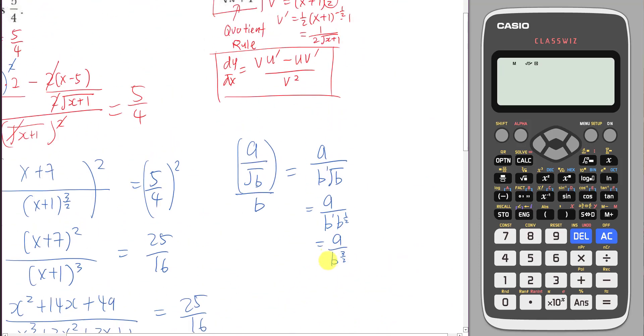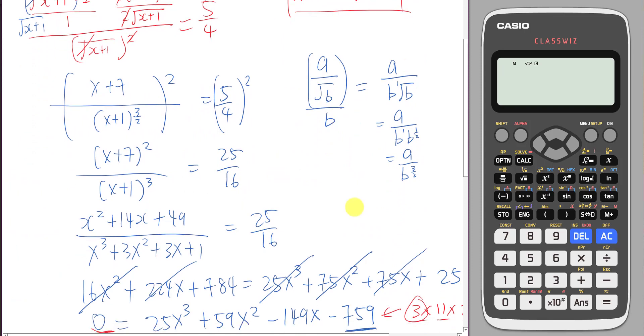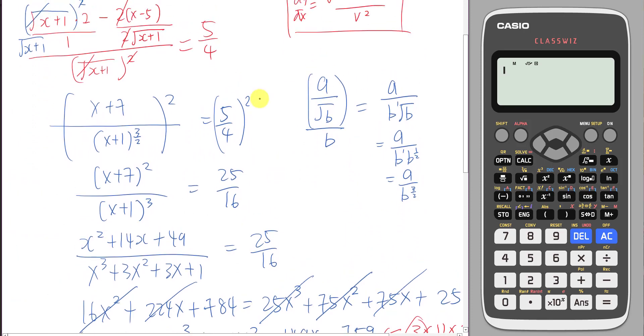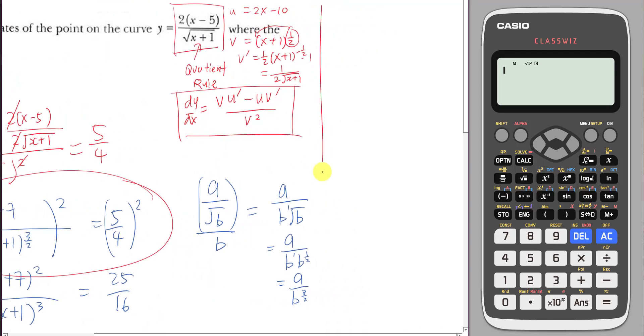So then I come back to this question at the very beginning because they asked us to find a coordinate. Now the only challenging part is by solving this equation. Eventually if I get x equals to 3 it's not hard for me to get a y. Because I have the y equation here. When x equals to 3 my y is 2(3) minus 5 over square root 3 plus 1. My y is basically negative 4 over 2. So y is negative 2. So the coordinates will be 3, negative 2.